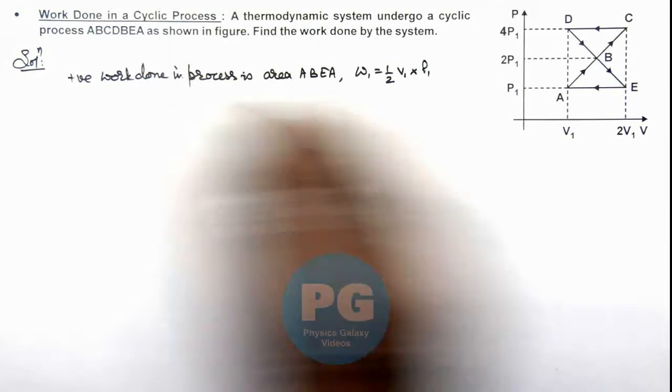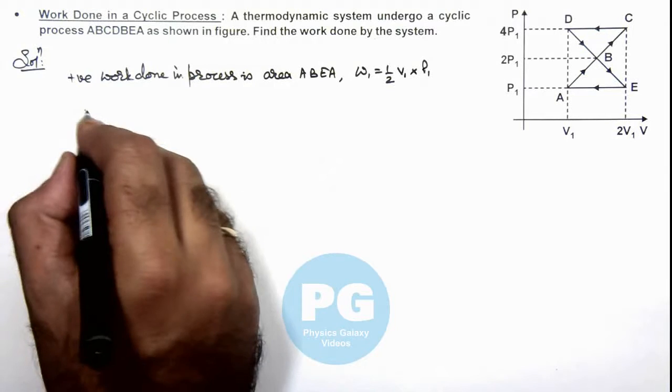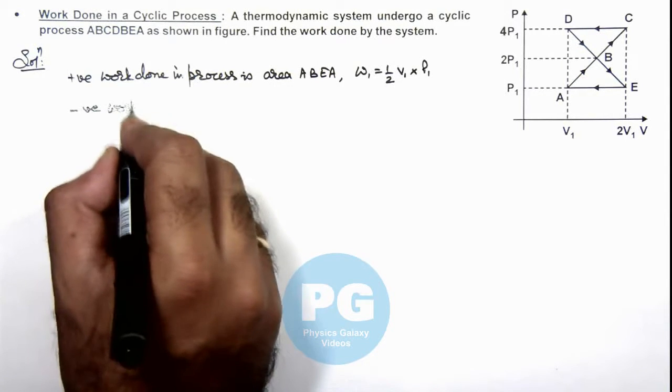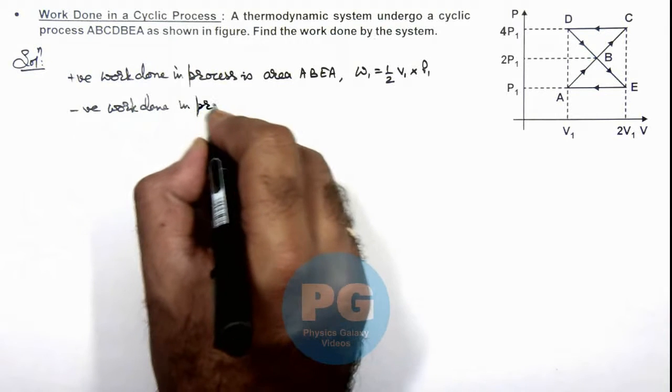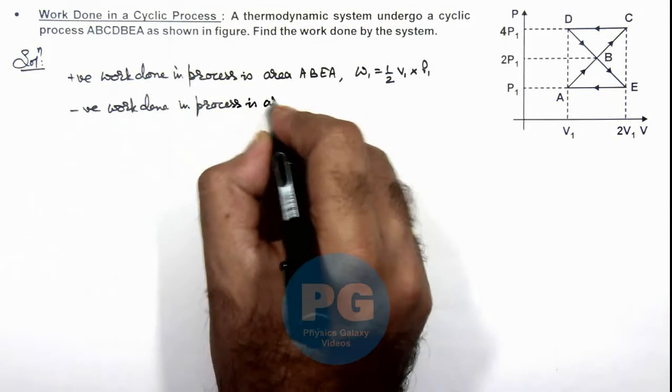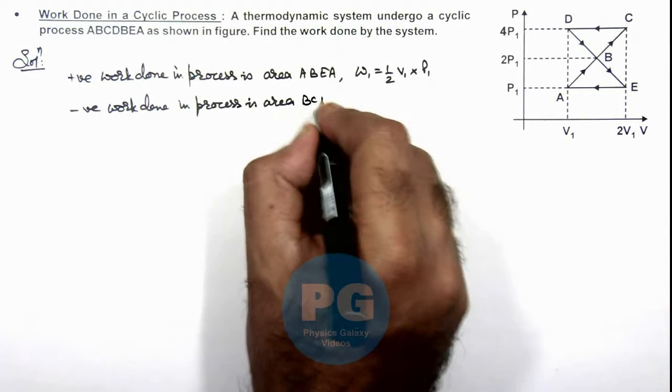And similarly for the upper triangular cycle, we can write negative work done in process is area BCDB.